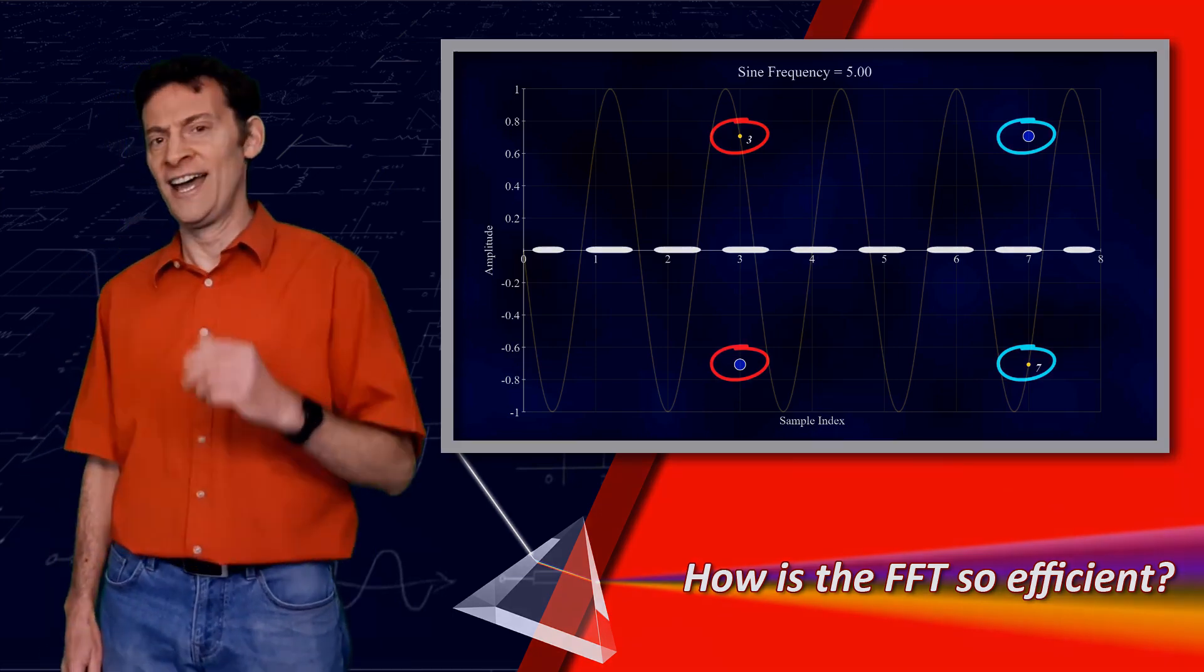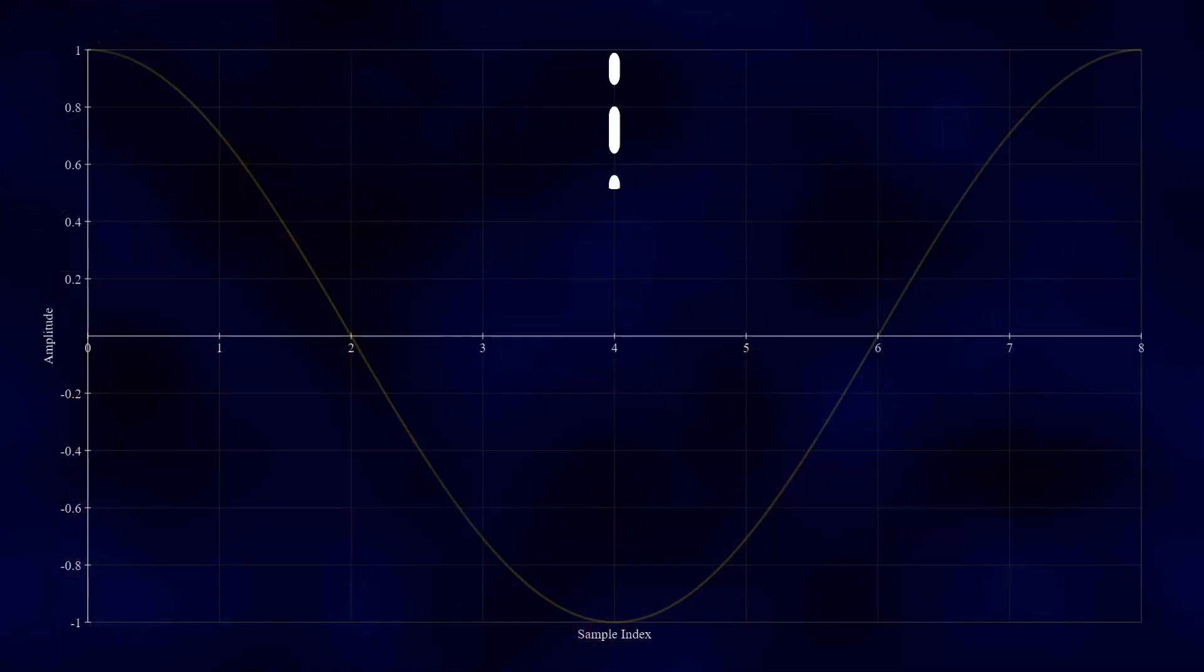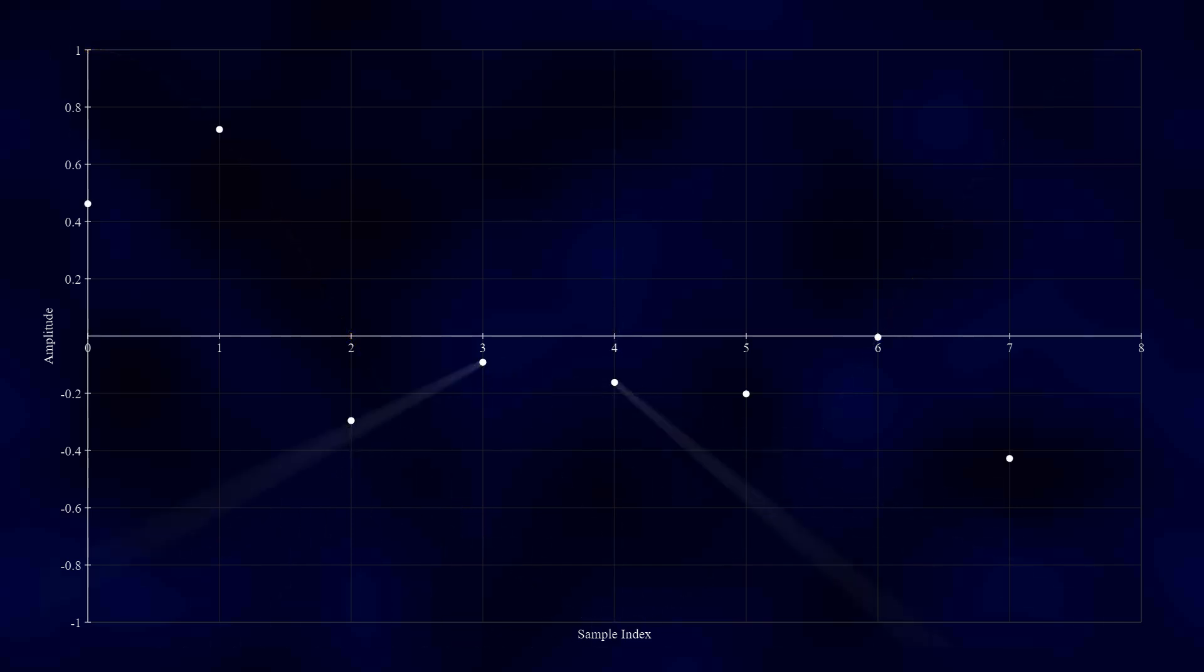Now, there's a bit of a caveat here. This symmetry only occurs when the samples align at certain points along the sine and cosine waves. This happens when the total number of samples is a power of 2, which is crucial for the FFT to work efficiently. Therefore, the number of samples in your signal must be a power of 2. This is why my example used 8 samples. 8 is 2 cubed.